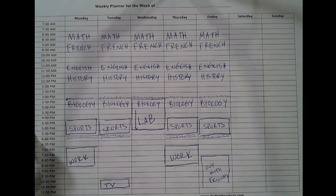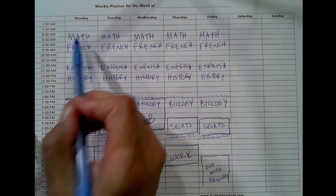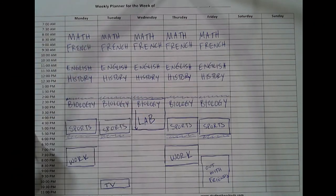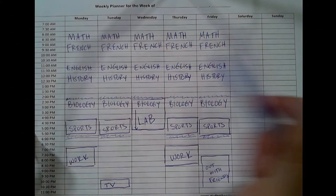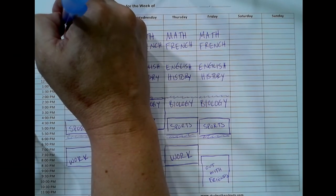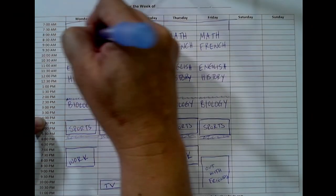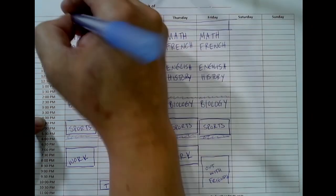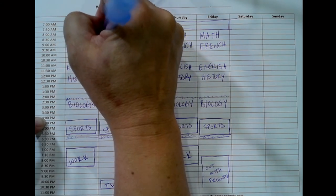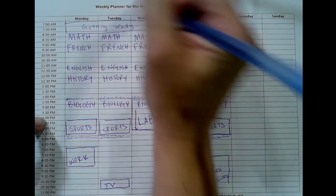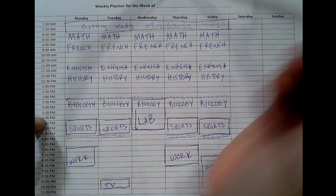The next thing to factor in is time for meals, grooming, and other self-care. If the time before math class every morning is taken up with getting breakfast, taking a shower, doing your hair, getting dressed, and doing your makeup — and all of that time is getting-ready time not available for study — go ahead and mark that time off as getting ready so that it doesn't look available to you.